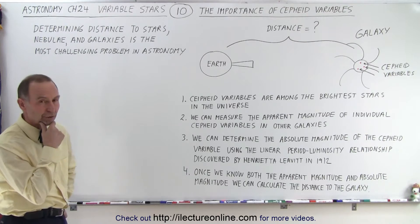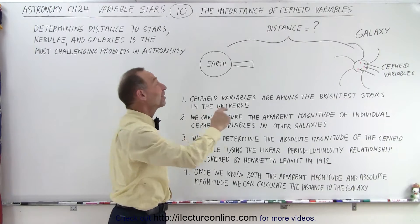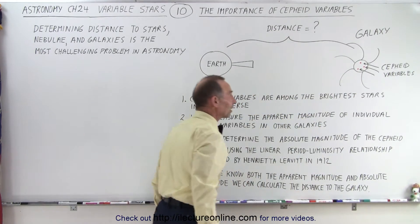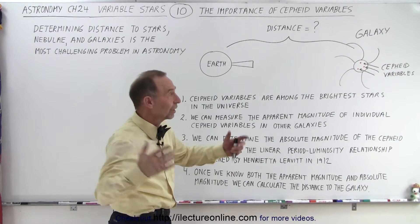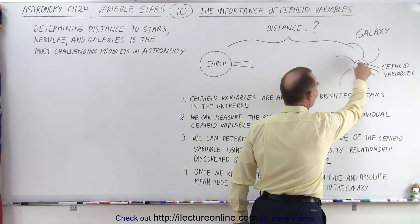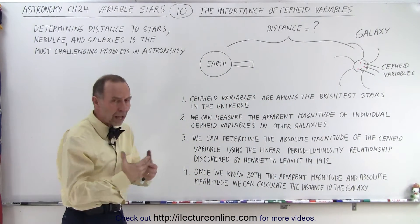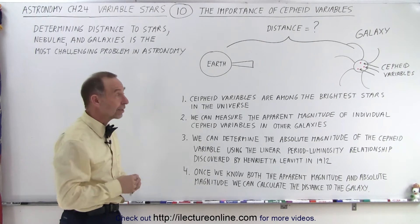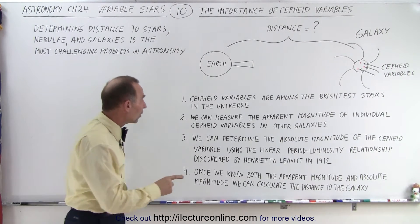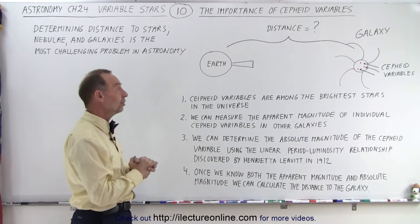So, Cepheid variables — how are they used? Let's say that we're here on the Earth looking through a telescope at a far away galaxy, maybe 10, 20, 30 light years away. Inside that galaxy, there will probably be some Cepheid variables, but we don't know the distance to the galaxy — that's the problem. This is where Cepheid variables come in very handy. Cepheid variables are among the brightest, largest stars in the Universe.